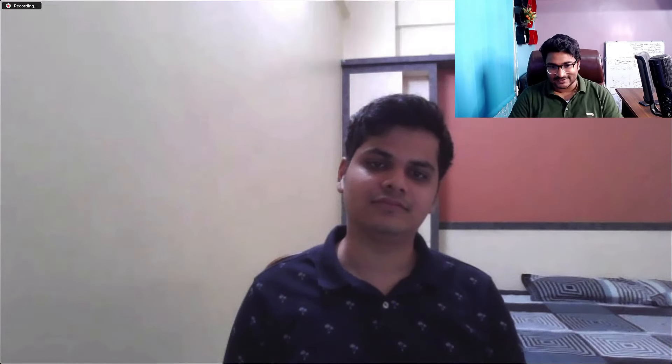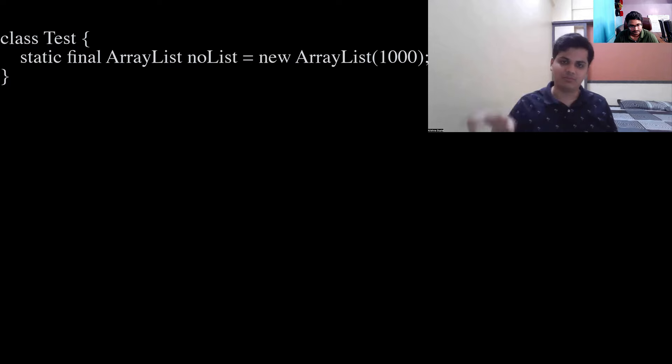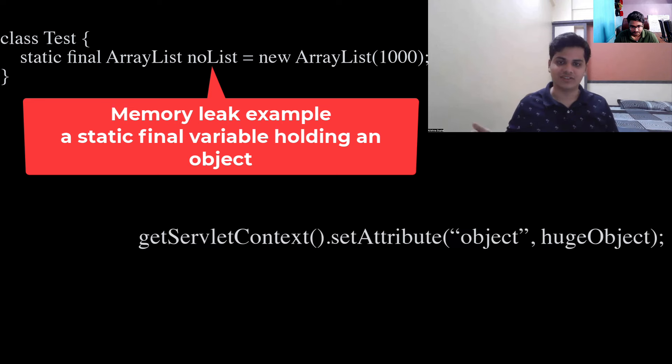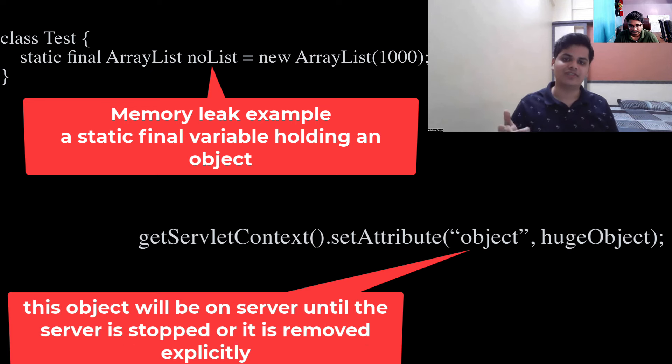What do you understand about memory leak in Java and how would you protect your code from it? Memory leak is a scenario where we assign memory to a resource and forget to clean it. During multiple successive garbage collection cycles, the garbage collector is not able to clean it up, yet the resource is still allocated space in memory without actually being used in the program. This results in decreased performance, especially in server-based programs that run continuously without termination.